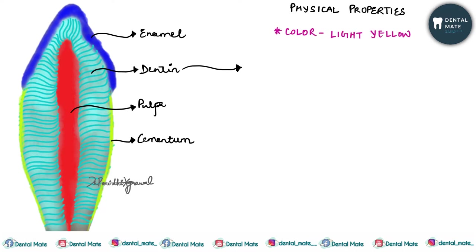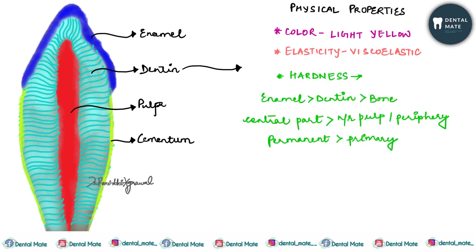The first physical property is color — dentine is light yellow in color and it becomes darker with age. Next is elasticity — dentine is viscoelastic and is subjected to slight deformation.